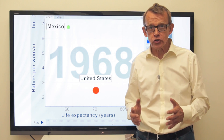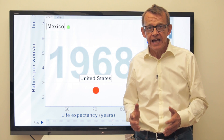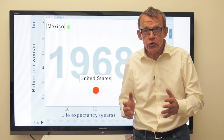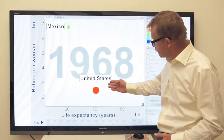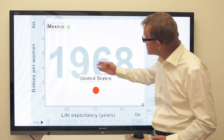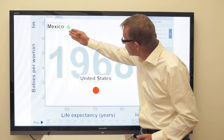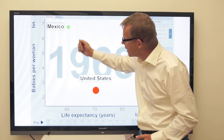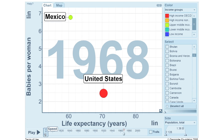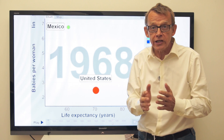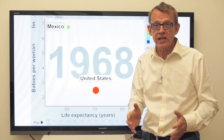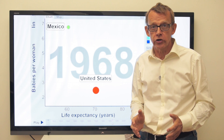I am Professor Hans Rosling. Let me show you the difference between the United States and Mexico. I start in the year 1968 — that's the year when Mr. Donald Trump graduated from university.